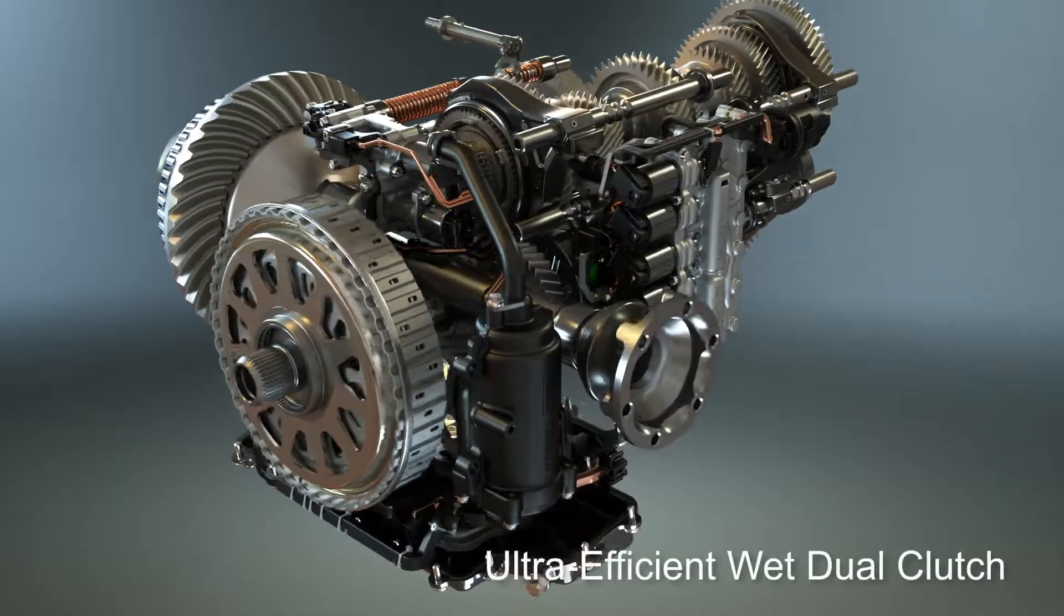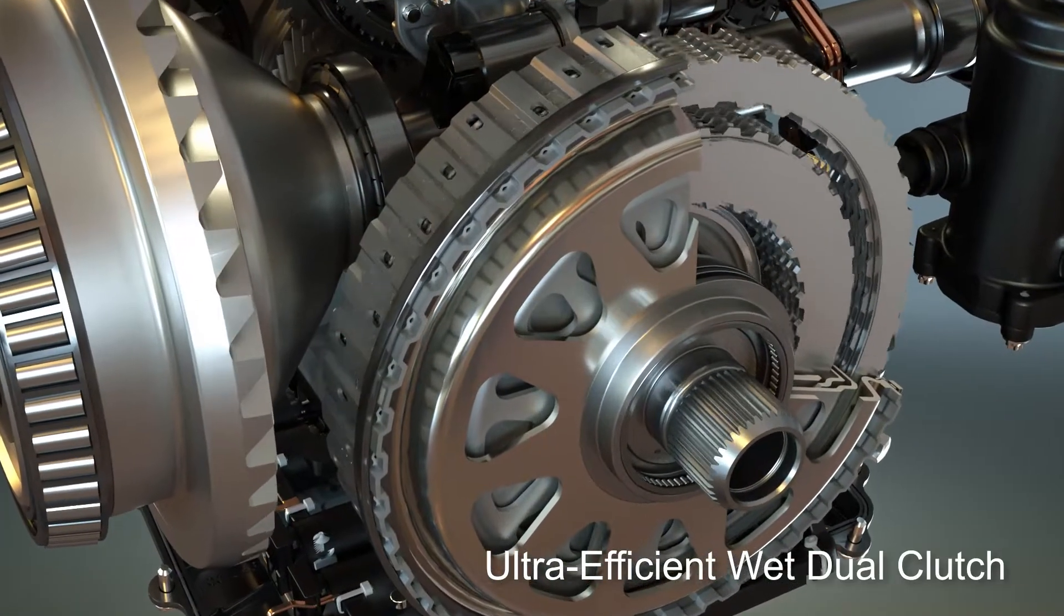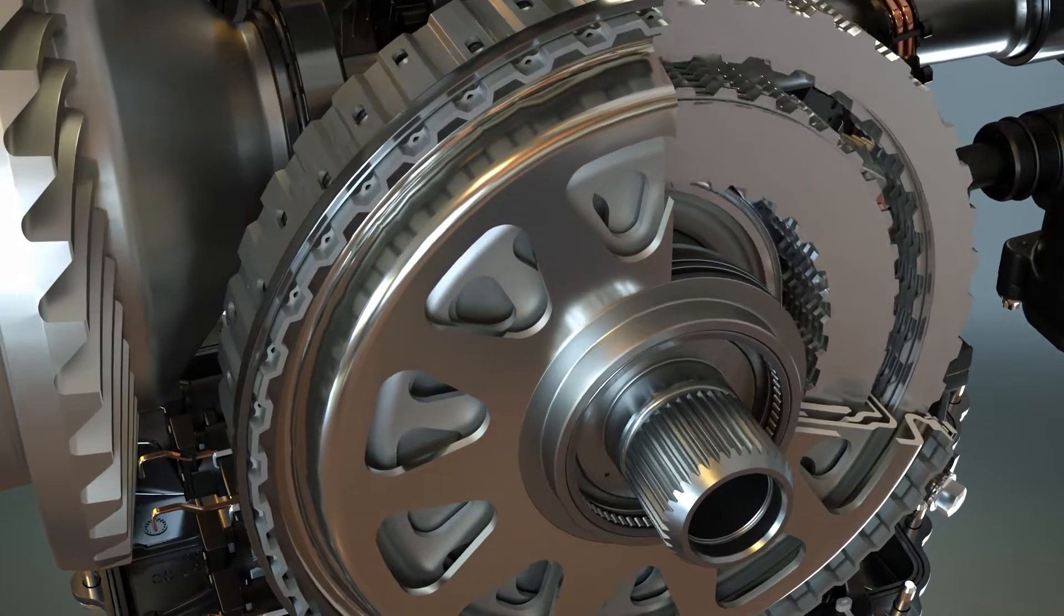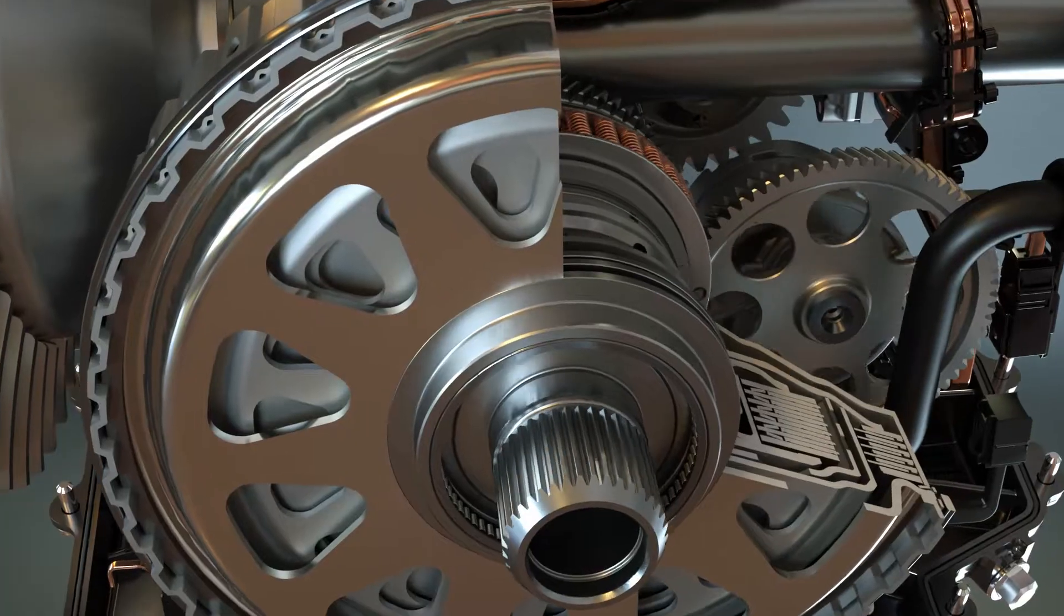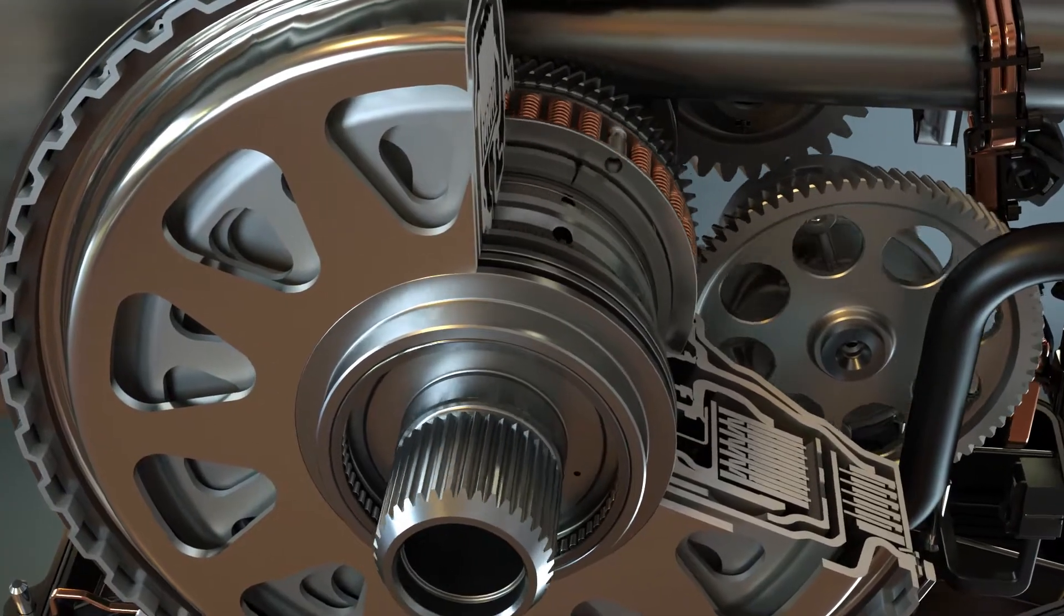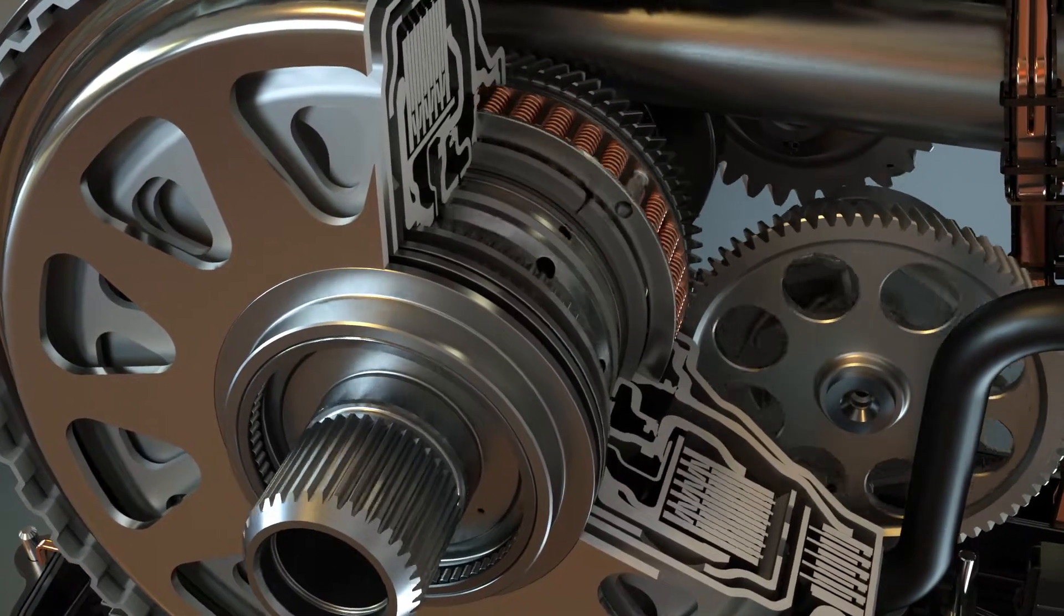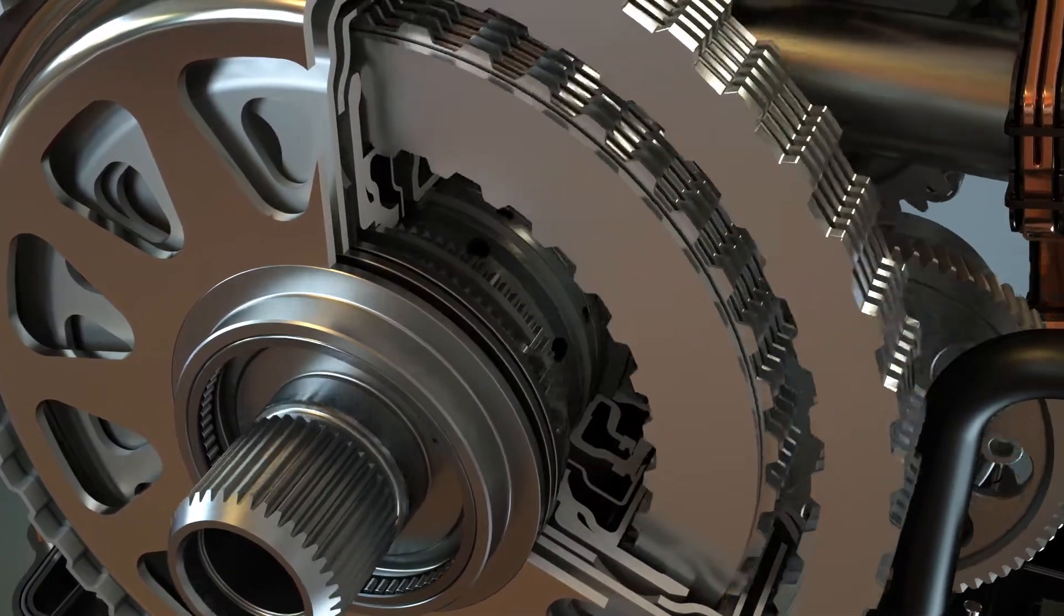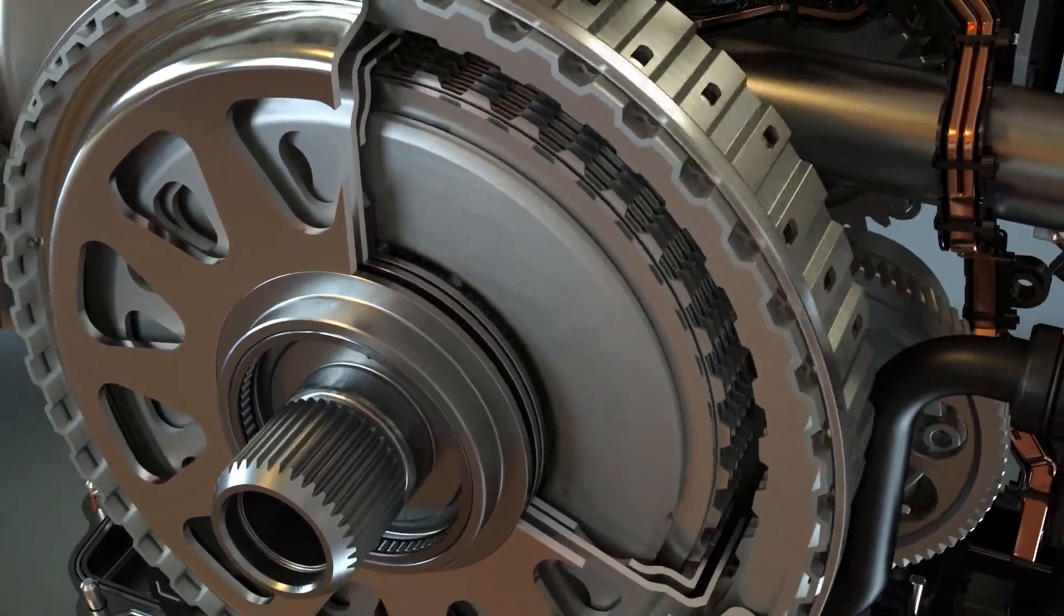The Tremec DCT features two wet clutches that engage and release in perfect computer controlled synchronization. The concentric clutch design is normally open and hydraulically controlled with up to 30 liters per minute of lubricant when needed. The concentric design reduces the length of the transmission, allowing for shorter wheelbases and improved vehicle handling. Tremec proprietary friction paper is utilized for ultra-efficient control and thermal capacity with reduced wear.